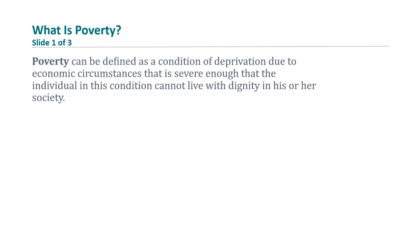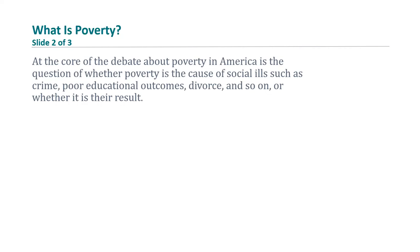The administration of Lyndon Johnson established a wide range of anti-poverty programs in the 1960s, including programs for education, job training and placement, as well as housing. This was part of what he called the quote-unquote war on poverty. Within just a few years, many of these programs and the whole ideology behind them had come under attack.